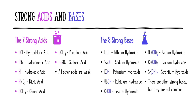Some examples of strong acids and bases are listed on this slide. There are seven strong acids, and this is a complete list — any other acid not on this list is considered a weak acid. It's a good idea to memorize this list so you can recognize a strong acid by name or formula. The eight strong bases listed are the most common strong bases; there are other strong bases that exist but are not very common, so we'll focus on knowing these eight.